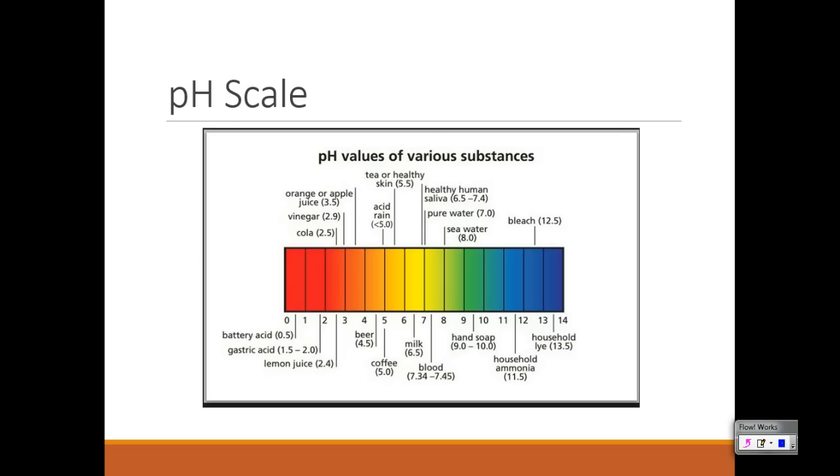Here's another pH scale, actually, with just a couple common things that you can relate to, I guess, to see the pH. So if you look at vinegar, vinegar is an acid, and it has a pH of 2.9. We do have seawater there at 8.0, so it's a little more basic, and then bleach, which is a 12.5, which is going to be basic as well.